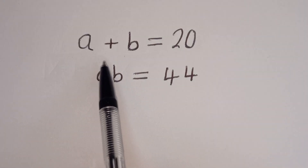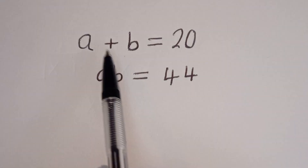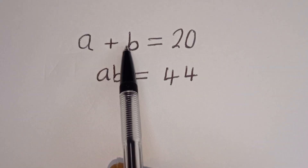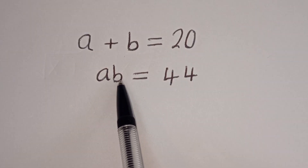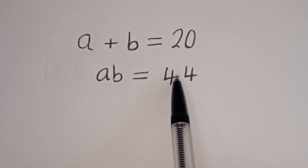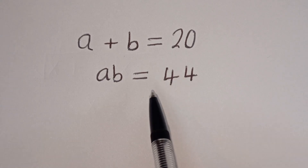Hello. How to solve for a and b in this equation: a plus b is equal to 20, and ab is equal to 44.